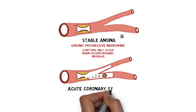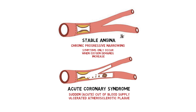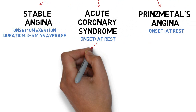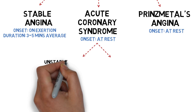In acute coronary syndrome, there is a sudden cut of blood supply due to an ulcerated atherosclerotic plaque. This blocks the more distal, narrower vessel. This complete block causes symptoms to manifest even at rest. In Prinzmetal angina, there is also a sudden cut of blood supply, but due to spasm of the blood vessel. Acute coronary syndrome can be further divided into unstable angina or myocardial infarction.